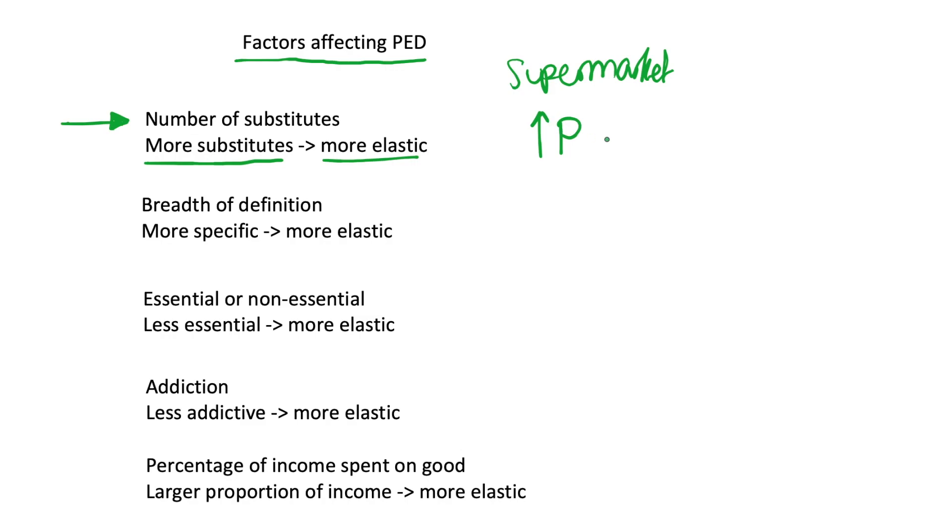We have lots of substitutes nearby that we can choose instead. And so this increase in price of one of those supermarkets is going to cause a very large decrease in quantity demanded because there's lots of substitutes there. So this makes it more price elastic, that certain good or service, because any change in price is going to cause a much larger decrease in quantity demanded.